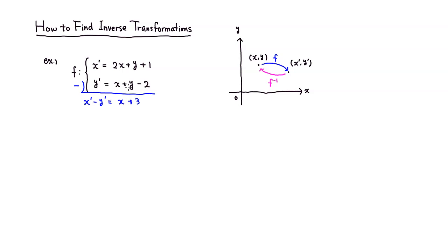We're almost done — we're trying to isolate x, so we need to get rid of the 3. We can simply subtract 3. Switching sides, you have x all by itself on one side, and then x prime minus y prime minus 3 on the other side.